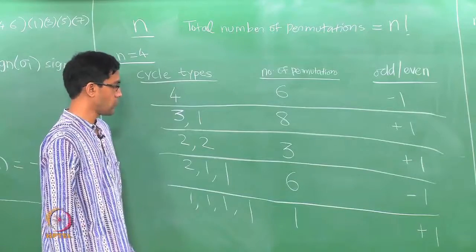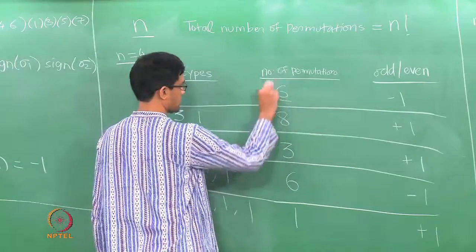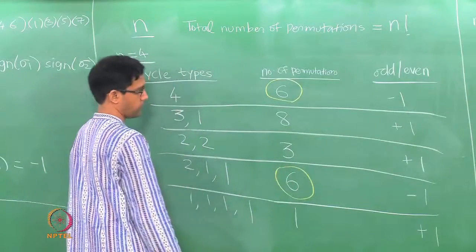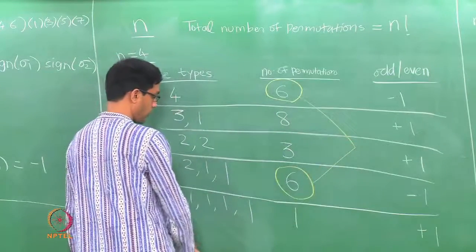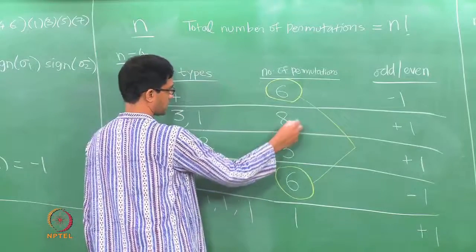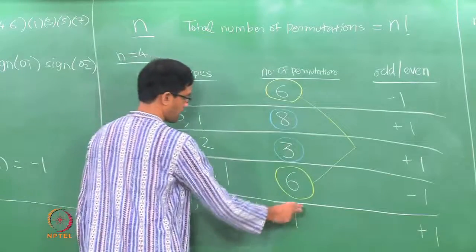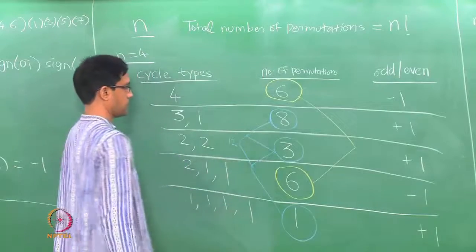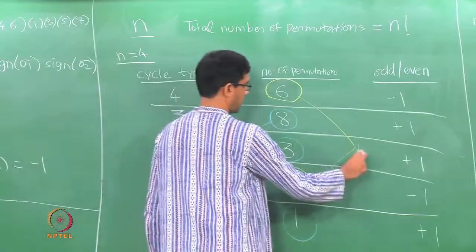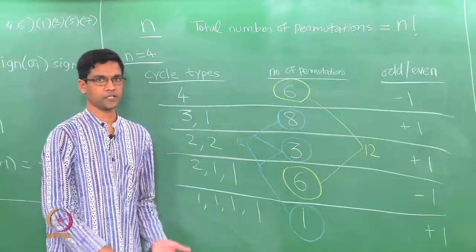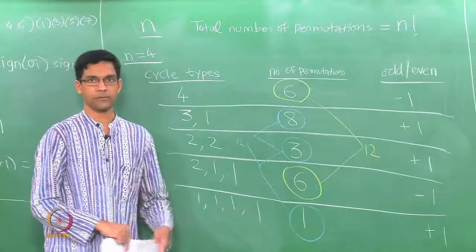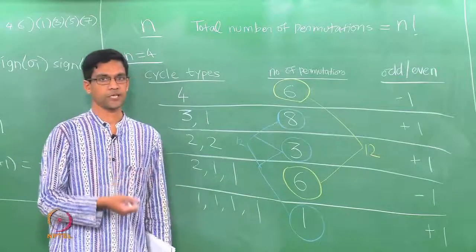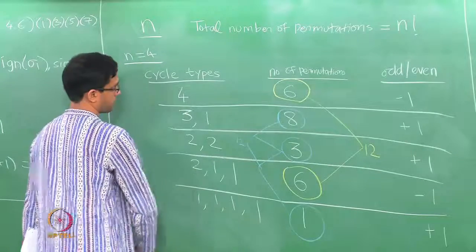Counting the totals: the odd permutations are the 6 with cycle type 4 plus the 6 with cycle type 2,1,1 — giving 12 odd permutations. The even permutations are 8 with cycle type 3,1, plus 3 with cycle type 2,2, plus 1 with cycle type 1,1,1,1 — giving 12 even permutations. So exactly half are odd and half are even. This is true in general: n factorial divided by 2 permutations are even and n factorial divided by 2 are odd.